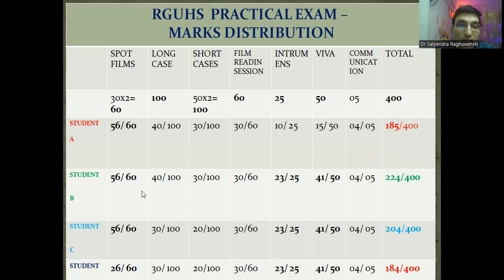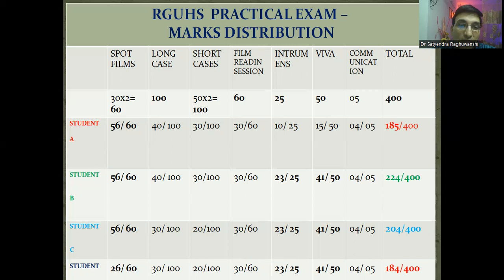Whereas another student with similar marks in spotters, long case, short case, and film reading scored really well in instruments and in the viva, and could comfortably manage to pass. Another student scored similar marks but couldn't do well in long case or short case; however, he performed really well in the viva and instruments, and simply managed to sail through.